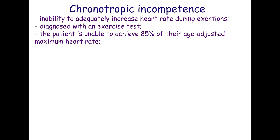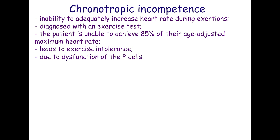Sinus bradycardia, or a normal heart rate, is observed during exercise. The heart rate either does not increase or increases only slightly during exercise. This leads to exercise intolerance. Chronotropic incompetence is mainly due to dysfunction of the P-cells, which are unable to discharge at a high frequency.